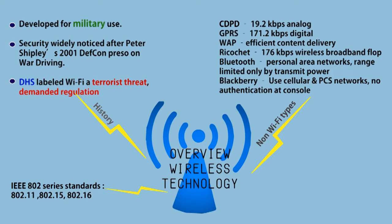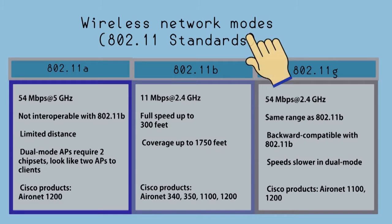IEEE 802 series standards include 802.1, 802.15, and 802.16. The 802.11 standards are the wireless network modes most commonly used.